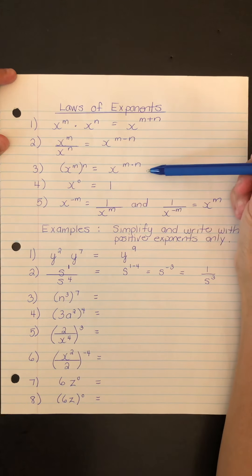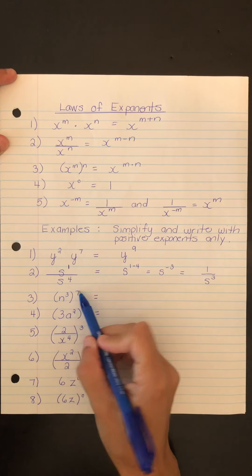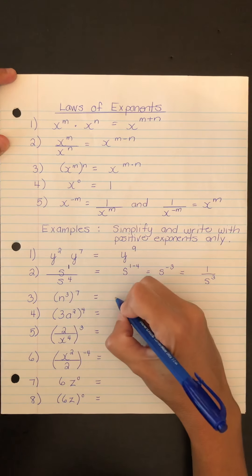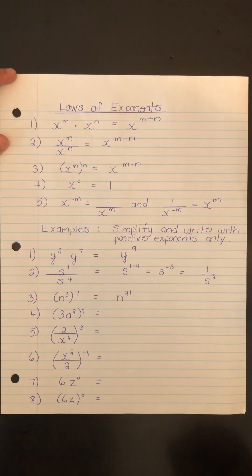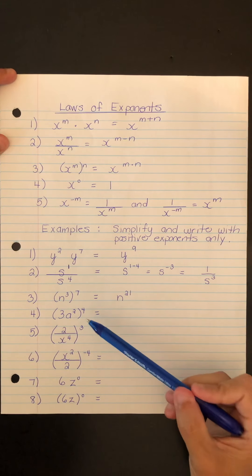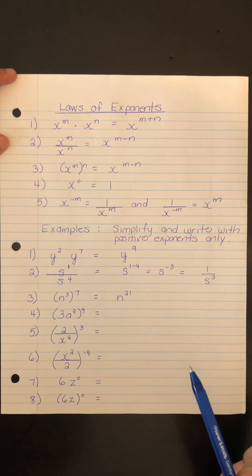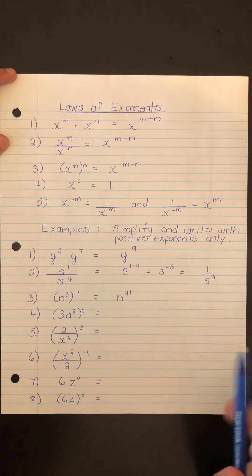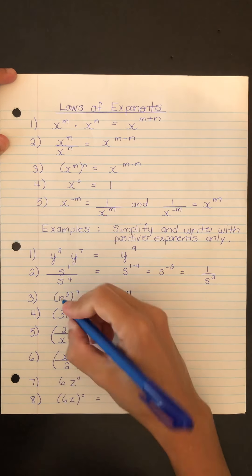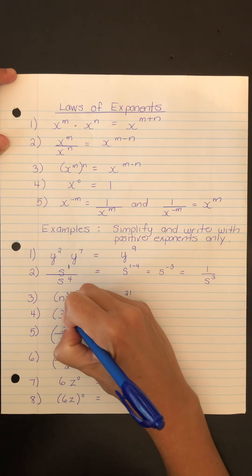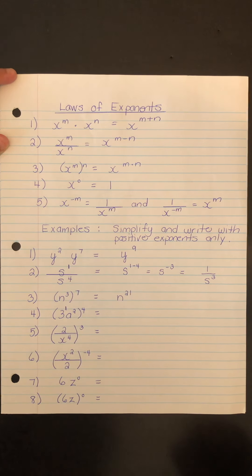Problem 3 is rule 3 — we simply multiply 3 by 7 to get 21. That same rule 3 is applied in the next example. It's important to note that the coefficient is its own power with an implied exponent of 1, so now we can use rule 3 and multiply the exponents.